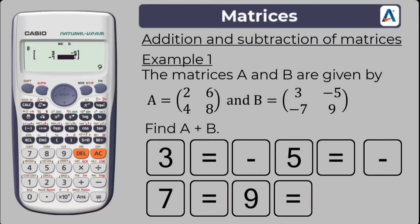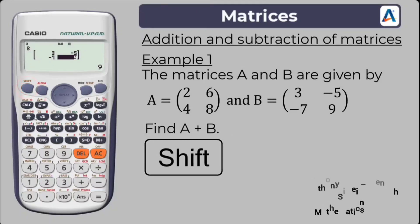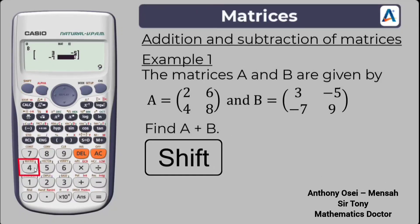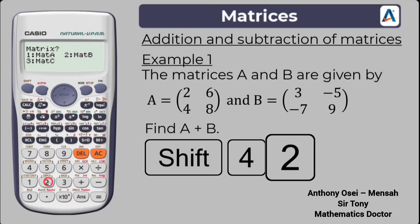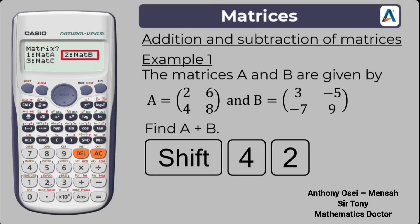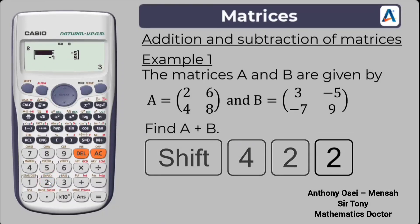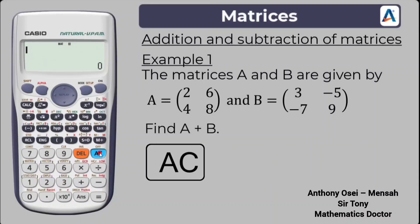We've input matrix B on the calculator. Now save it in memory by pressing shift, then number four — the matrix key. Select data at option number two, then select matrix B at option number two to label it. Press AC to confirm it has been stored in the calculator's memory.